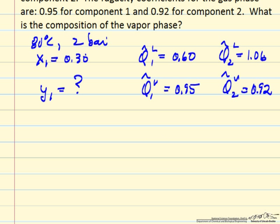For vapor-liquid equilibrium in a binary system, the fugacity of component 1 in the liquid phase must equal the fugacity of component 1 in the vapor phase. Fugacity is related to fugacity coefficients and total pressure.